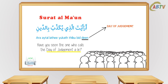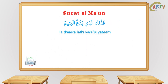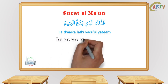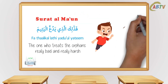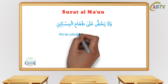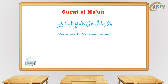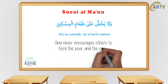So who is the one that called the Judgment Day a lie? The next verse explains: 'Fa-dhaalika alladhee yadu'ul-yateem' — the one who treats the orphans really badly and harshly. Imagine a person who has no parents and is treated really bad, yelled at and pushed around. No one would like that. The next verse says: 'Wa laa yahuddu 'alaa ta'aamil-miskeen' — and never encourages others to feed the poor and the needy.